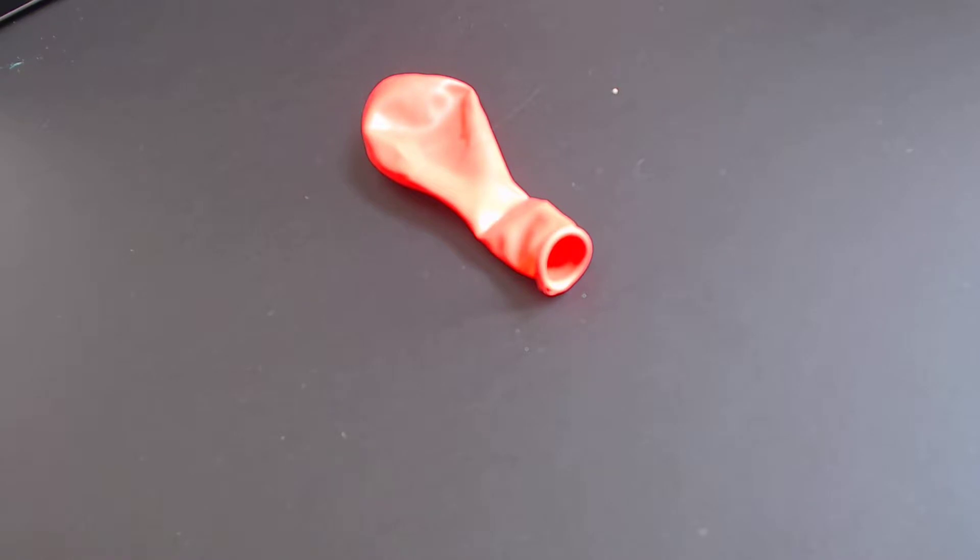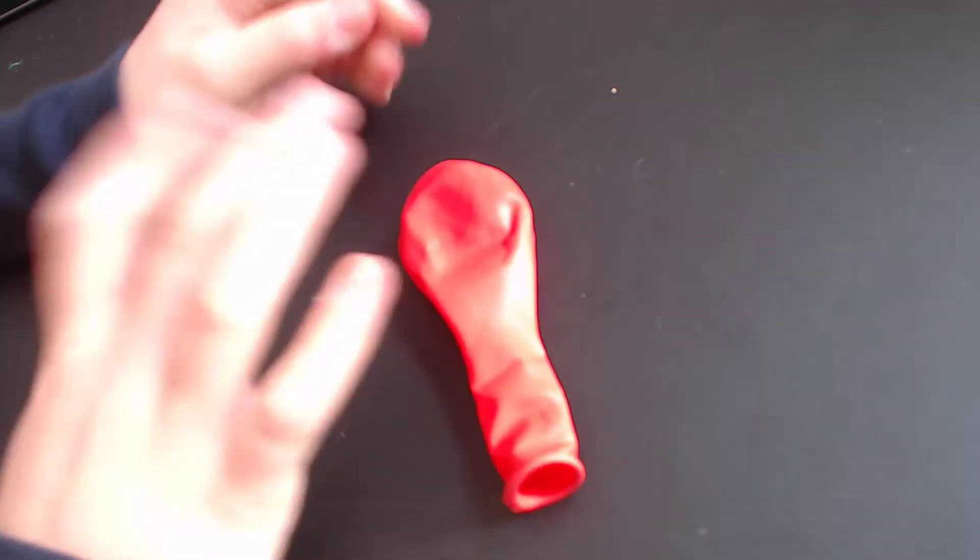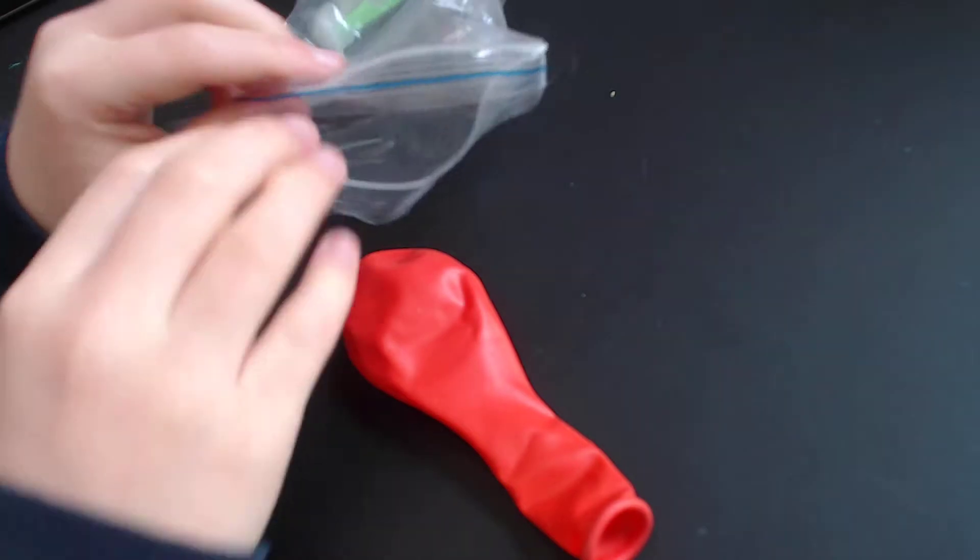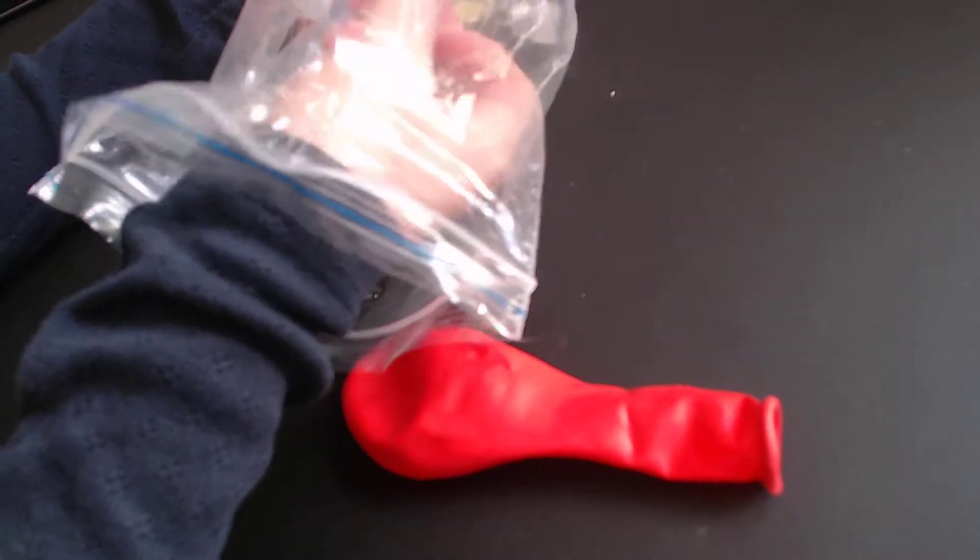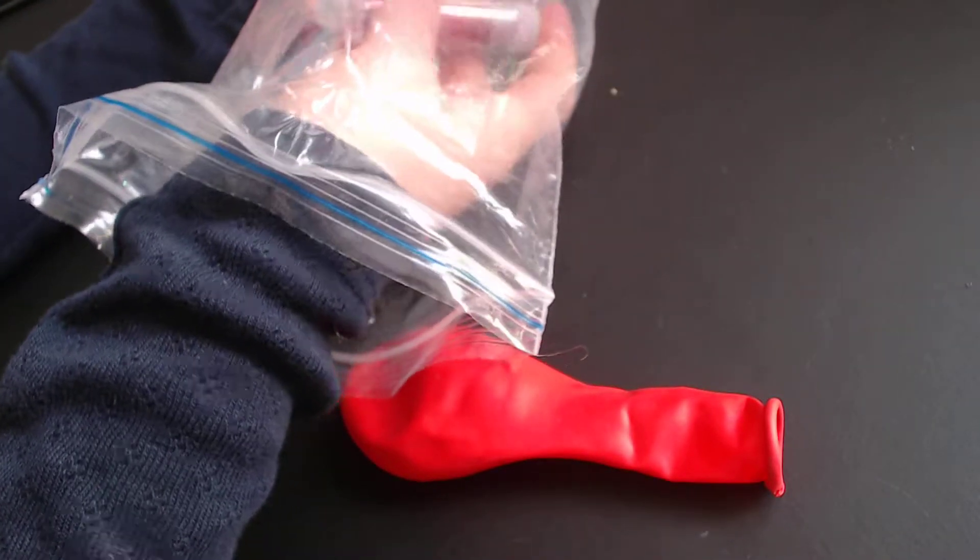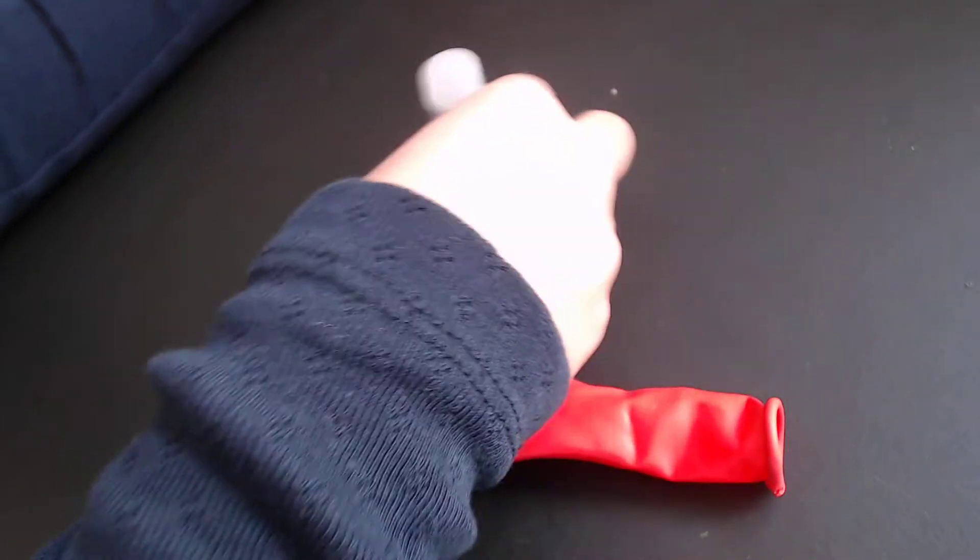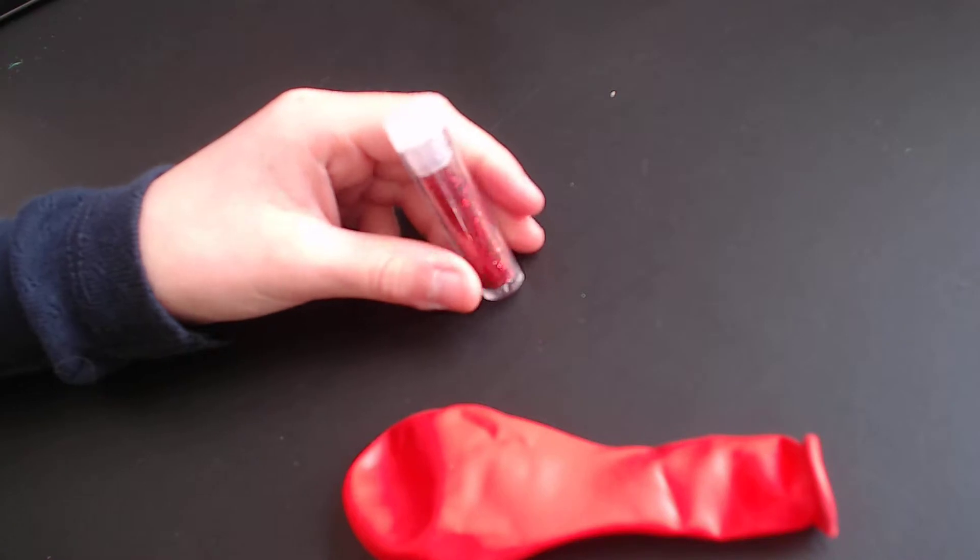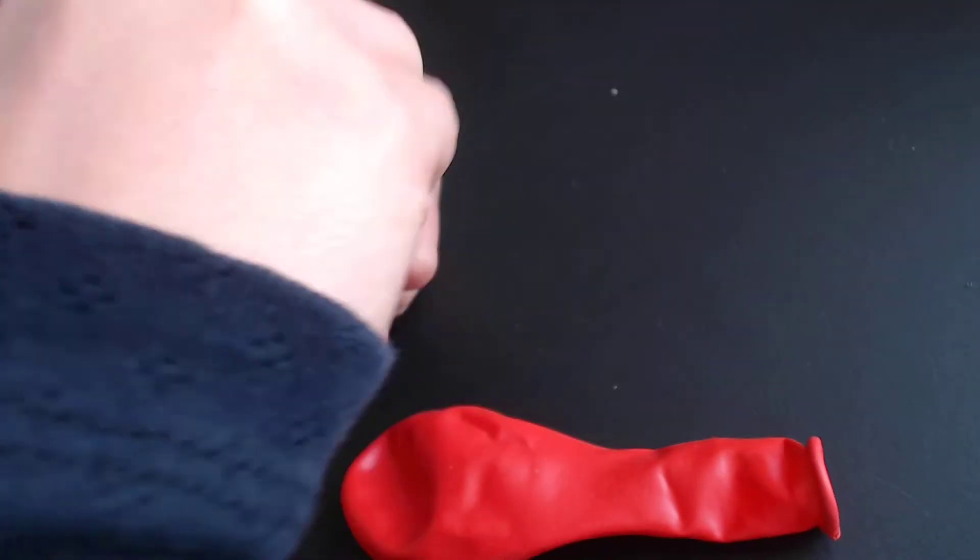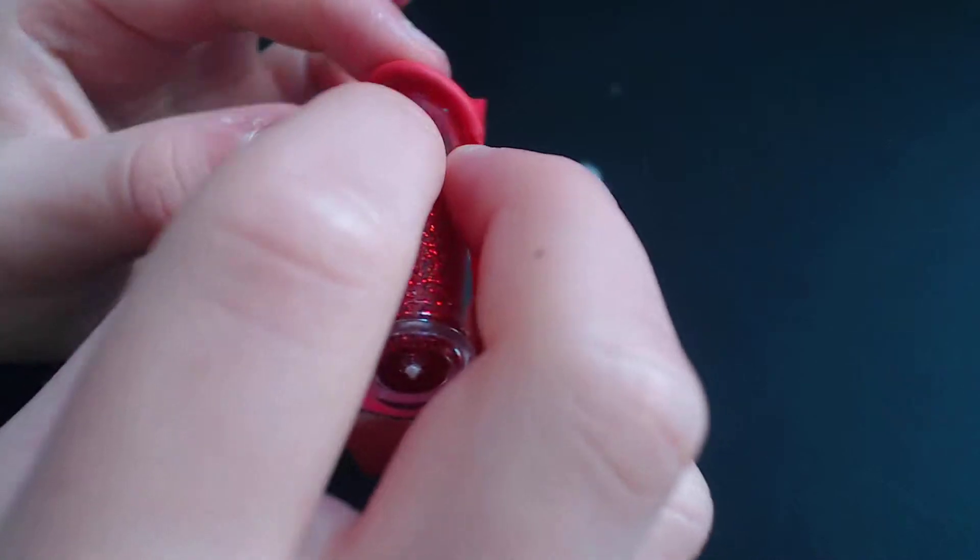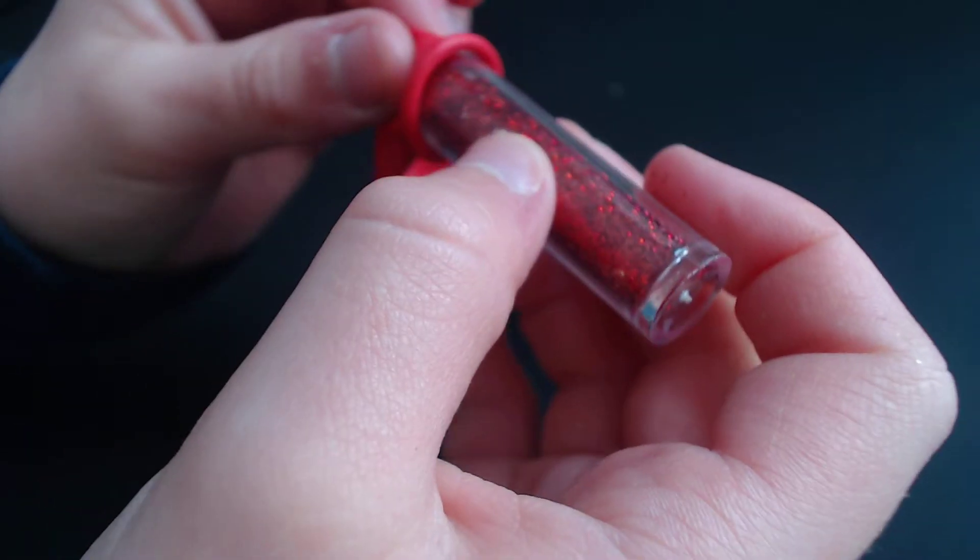The first step is to take your balloon and choose your glitter. I'm just going to choose this glitter. Then you want to take the lid off, take your balloon and just pour some in. I pour quite a lot because I can't control glitter, so don't worry about that.